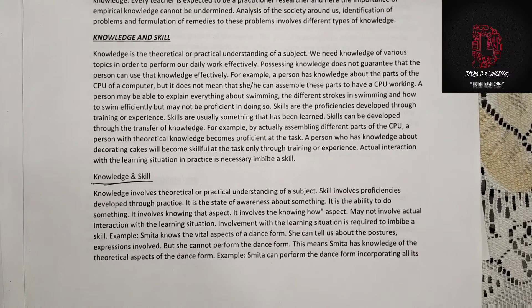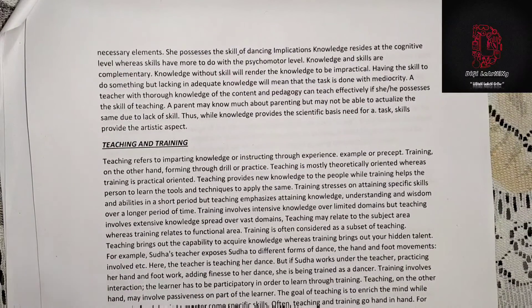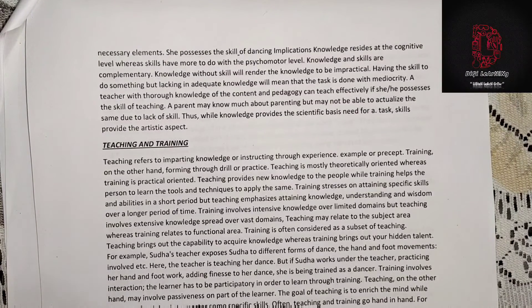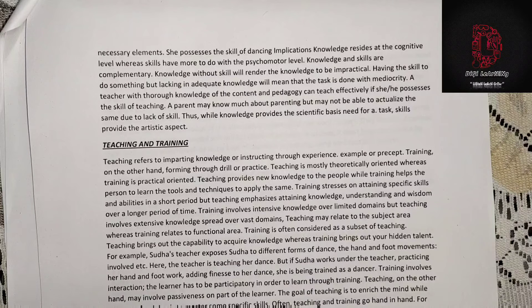Implications: Knowledge resides at the cognitive level, whereas skills have more to do with the psychomotor level. Knowledge and skills are complementary — knowledge without skill will render the knowledge impractical, and having the skill to do something but lacking adequate knowledge will mean that the task is done with mediocrity. A teacher with thorough knowledge of content and pedagogy can teach effectively only if they also possess the skill of teaching. A parent may know much about parenting but may not be able to actualize it due to lack of skills. Thus, while knowledge provides the scientific basis needed for a task, skills provide the artistic aspect.